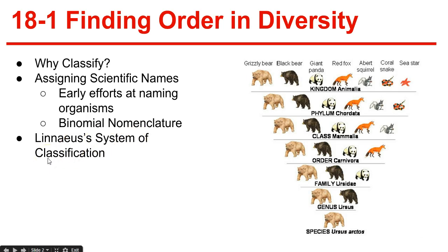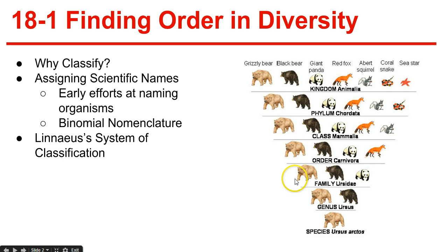Linnaeus' hierarchical system of classification includes seven levels. From smallest to largest, they are: species, genus, family, order, class, phylum, and kingdom — with kingdom being the largest.